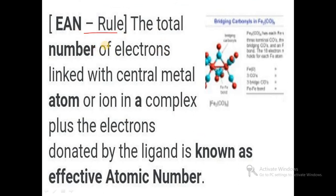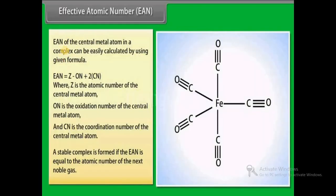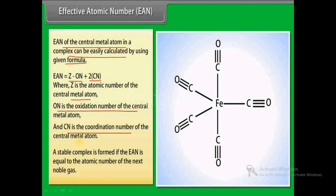In summary, the EAN rule states that the total number of electrons associated with the central metal atom or ion in a complex, plus the electrons donated by the ligands, is known as the effective atomic number. The formula used is: EAN = Z − ON + 2 × CN, where Z is the atomic number, ON is the oxidation number, and CN is the coordination number of the central metal atom. A stable complex is formed if the EAN equals the atomic number of the next noble gas.